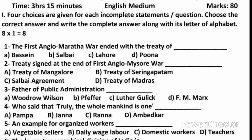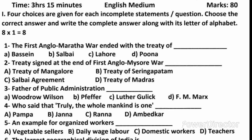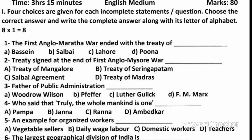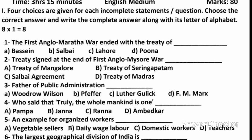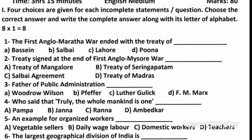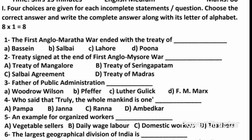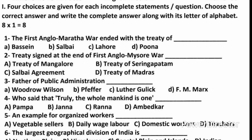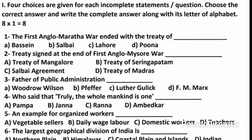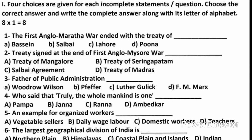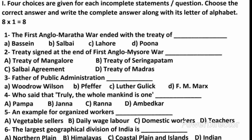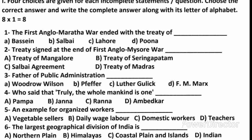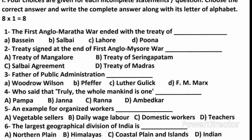Question 2: Treaty signed at the end of First Anglo-Mysore War — A. Treaty of Mangalore, B. Treaty of Seringapatnam, C. Selbai Agreement, D. Treaty of Madras. Answer: Treaty of Madras.